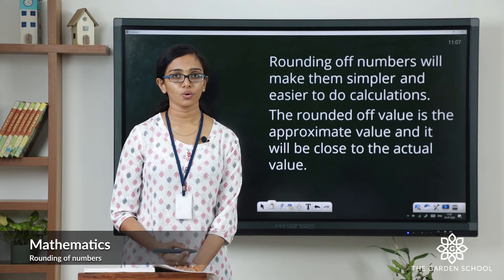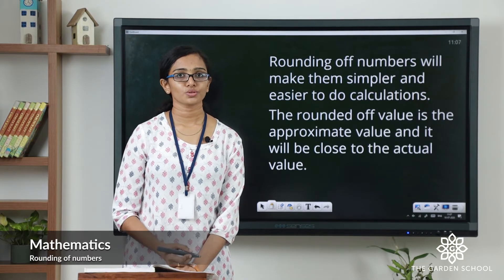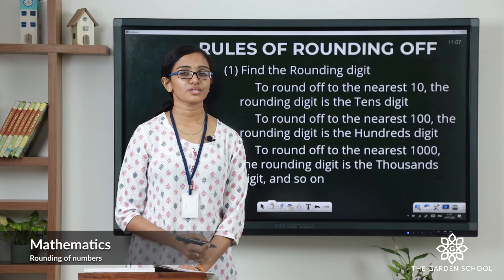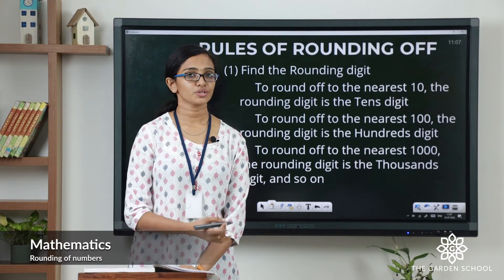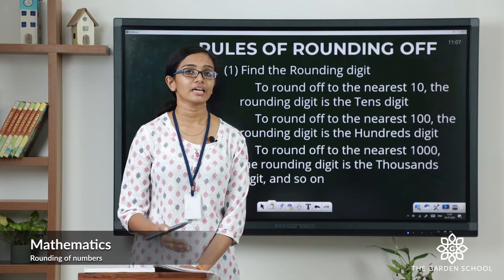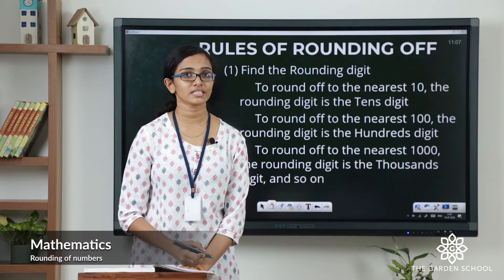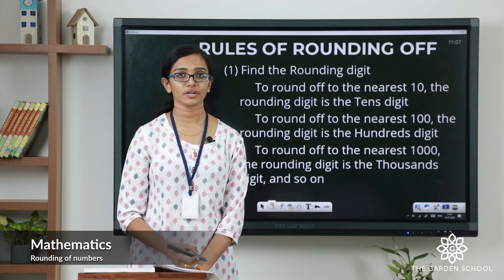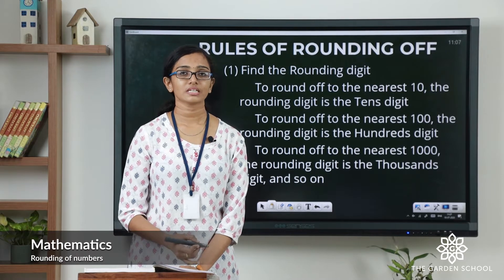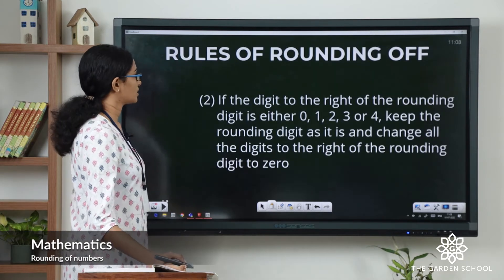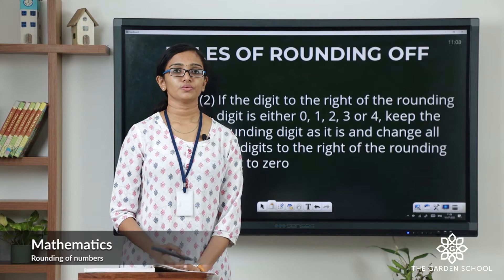Rounding of a number will make it simpler and easier to use in calculations. There are a few rules that we have to follow while rounding off numbers. The first step is to find the rounding digit. If you are going to round it off to the nearest 10, you're actually changing it to the nearest multiple of 10 — in that case the rounding digit will be the tens digit, that is the digit in the tens place.